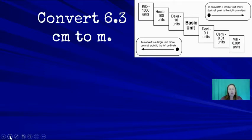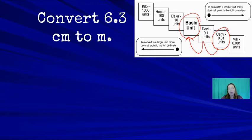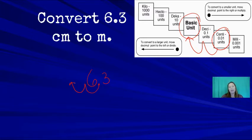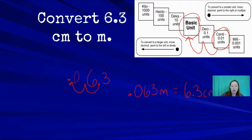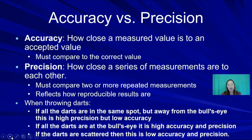Convert 6.3 centimeters to meters. Moving from centi to the base unit is two places to the left, so move the decimal two places left. 6.3 centimeters equals 0.063 meters. Always include units at the end of your measurement — people need to know what you're talking about.